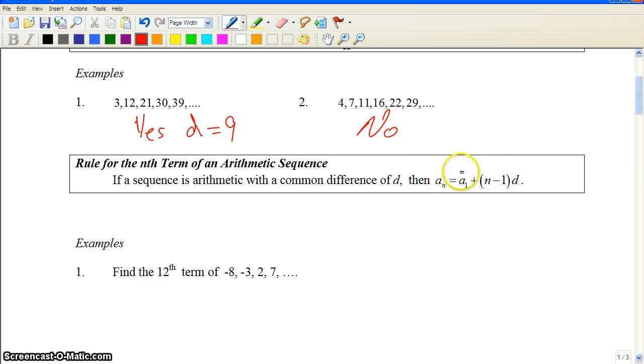We can generate the first term - actually, the first term is written right there. We can generate the 18th term, we can generate the 1.5 millionth term when we have this equation.